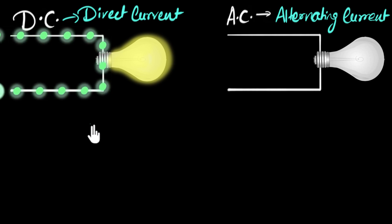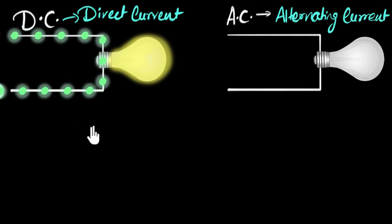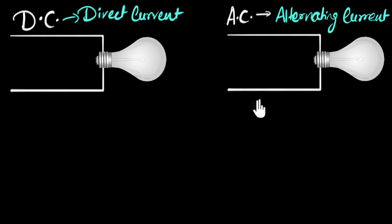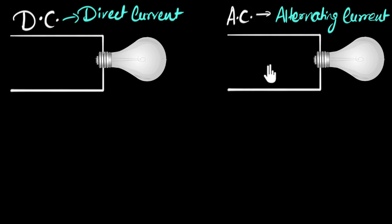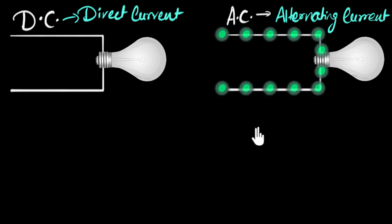What about alternating current? This is where the current keeps changing its direction continuously. Once the current would flow this way, then the current would change and flow the opposite direction — back and forth, back and forth. If you could visualize the electrons, you would see them going back and forth like this.